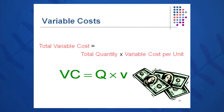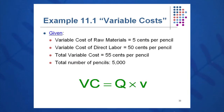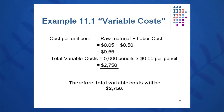Variable cost in total is equal to the total quantity times variable cost per unit. Here's an example: the company has received an order for 5,000 pencils. Each pencil has 5 cents of raw material and 50 cents of direct labor cost. What is total variable cost? Quantity times variable cost per unit: 5,000 pencils times 55 cents a unit — 55 cents by taking the 5 cents of raw material plus 50 cents of labor — gives a total variable cost of $27.50.